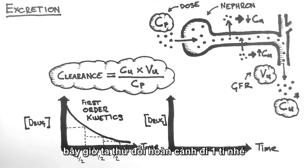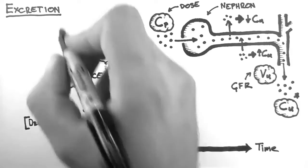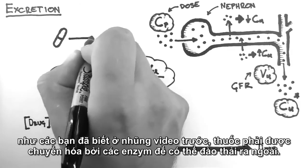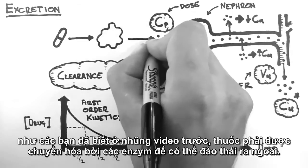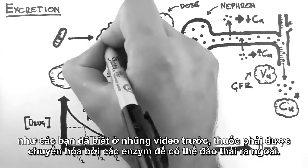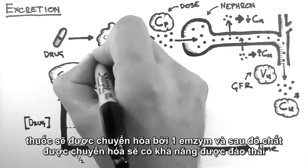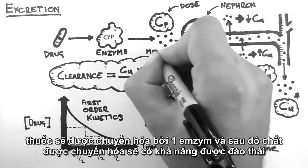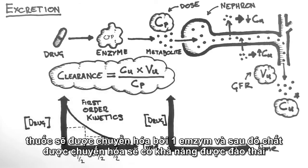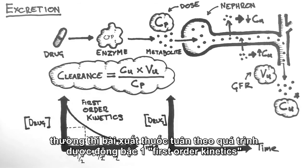Now let's change the situation a little. As we saw in the previous tutorial, drugs often have to be metabolized by an enzyme prior to excretion. The system would then look like this. A drug gets metabolized by an enzyme and then the metabolite gets excreted. Normally, the drug still conforms to first-order kinetics.